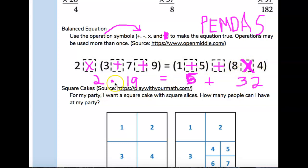So 2 times 19 equals 6 plus 32. Well, let's do 2 times 19. If we go over here and do that, we find out that 2 times 9 is 18. Carry the 1. 2 times 1 is 2 plus 1 is 3. So this side is 38.